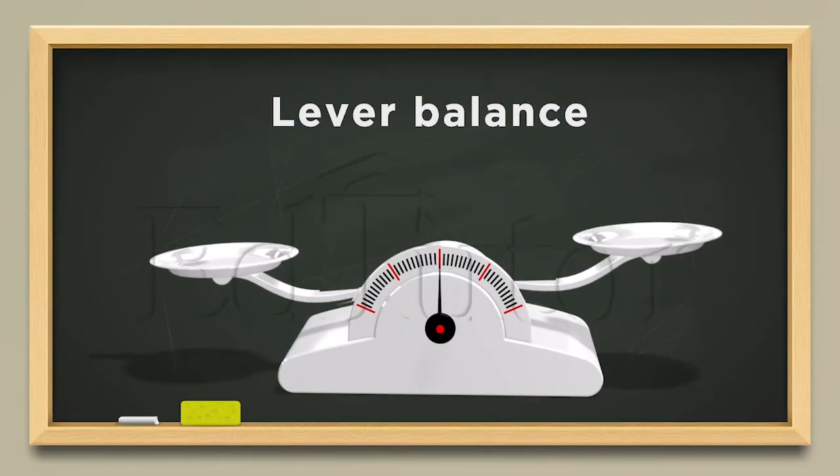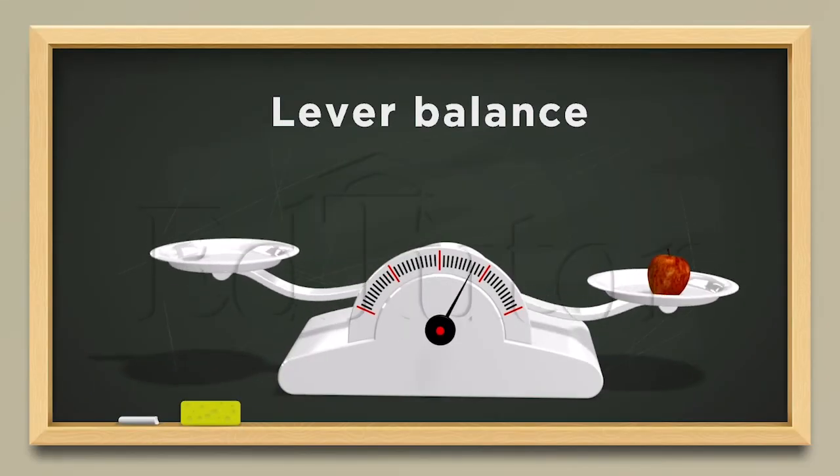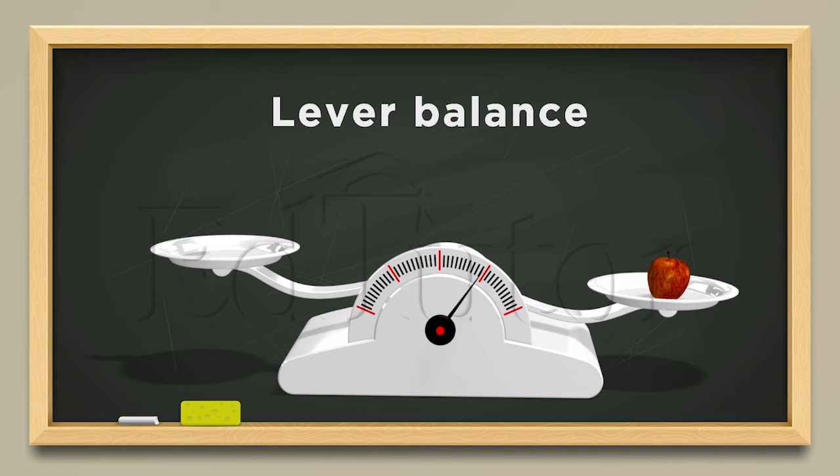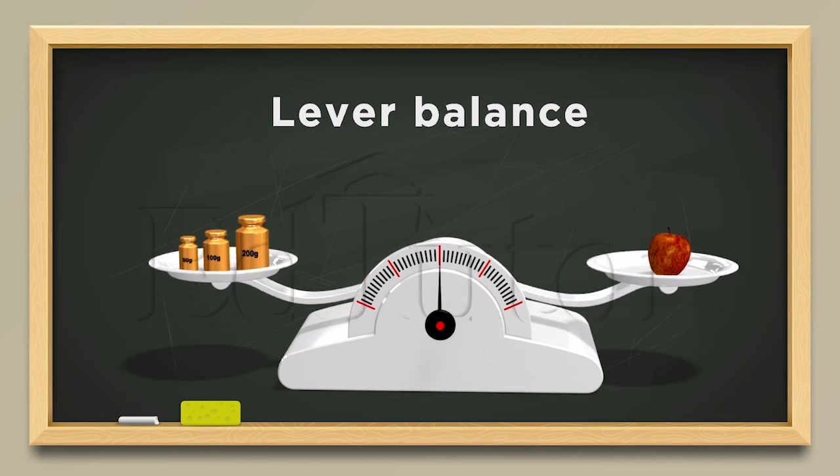All balances work on the same principle. But instead of a beam and fulcrum, the lever balance consists of a system of levers. When we place an unknown mass on one pan and known masses on the other pan, the pointer of the lever system moves. The pointer is brought to zero by varying the known masses.